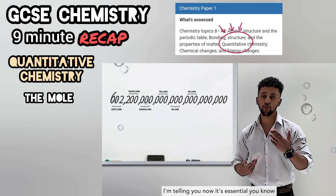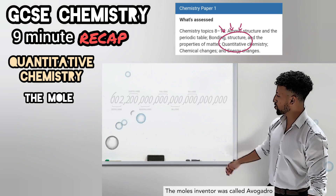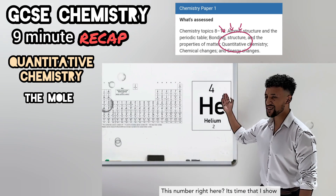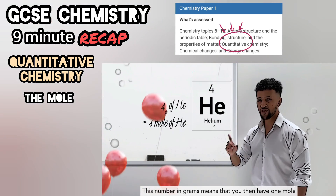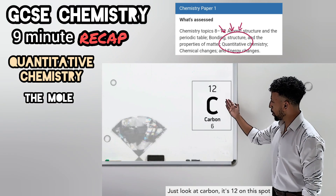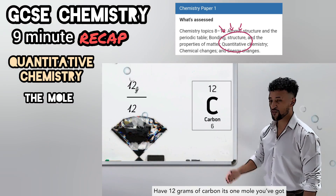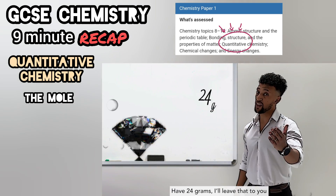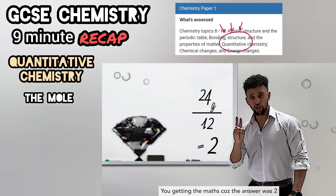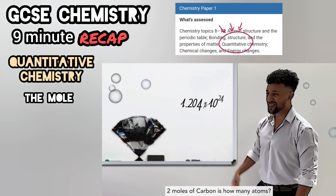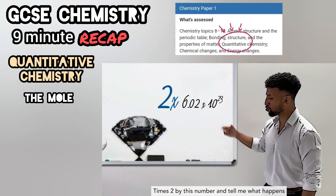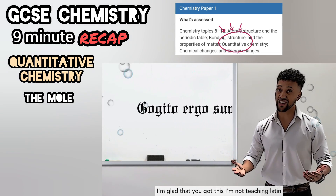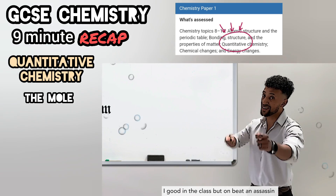Six times ten to the twenty-three — that's the number of atoms that one mole amounts. The mole's inventor was called Avogadro. This number in grams means that you have one mole. Just look at carbon: it's 12 on the spot — have 12 grams of carbon and it's one mole you've got. Have 24 grams and the answer is two moles of carbon. Times two by Avogadro's number and tell me what happens.